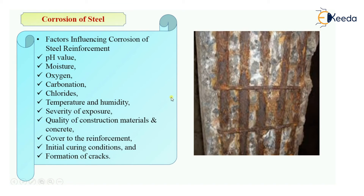So all these are the factors that influence the corrosion of steel reinforcement: pH value, moisture, oxygen, carbonation, chlorides, temperature and humidity, severity of exposure conditions, quality of construction material, cover to the reinforcement, initial curing condition, and formation of cracks. So this was the video about corrosion of steel. Thank you.